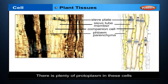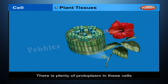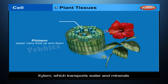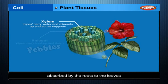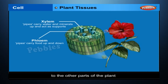Conducting Tissues. Transport of water and food to different parts of the plant is one of the main functions of plant tissues. There are two types of conducting tissues in plants: xylem, which transports water and minerals absorbed by the roots to the leaves; and phloem, which transports the food made by the leaves to the other parts of the plant.